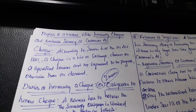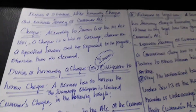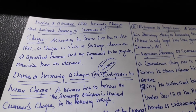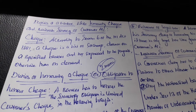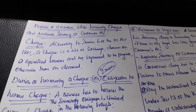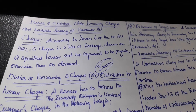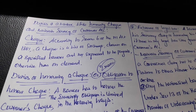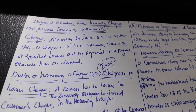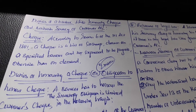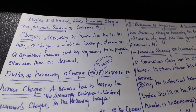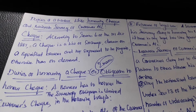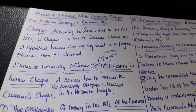Before starting the lesson, we will look at the meaning of a check. According to Section 6 of the Negotiable Instruments Act 1881, a check is a bill of exchange drawn on a specified banker and not expressed to be payable otherwise than on demand. If the customer demands, the banker will pay the amount — that is a check.